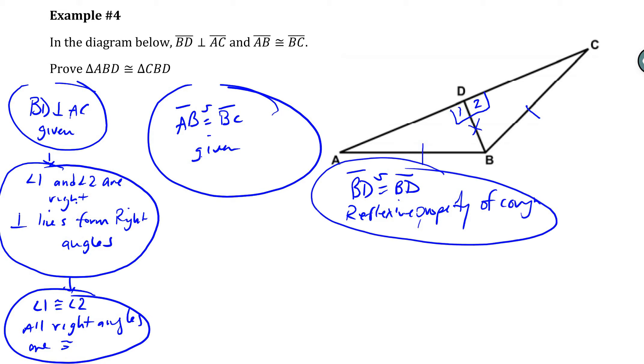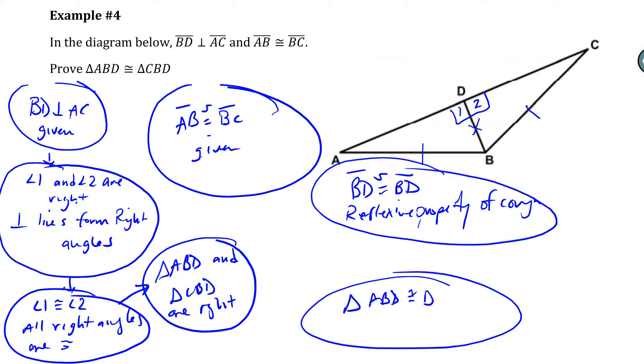Now, because we have the hypotenuse and the leg labeled, we have to use hypotenuse leg here, which means that we have to have another bubble coming off of these right angles, saying that triangle ABD and triangle CBD are right. Then we can finally say that the two triangles are congruent. So I could say triangle ABD is congruent to triangle CBD by hypotenuse leg. And we draw arrows from everything here.